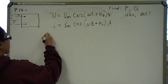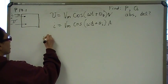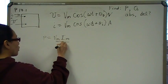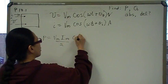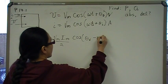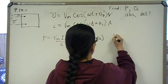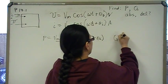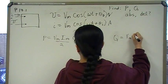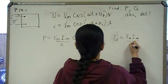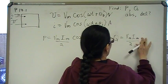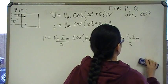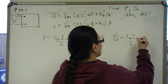You need to know what the formula is. The formula for real power is: P equals the magnitude of the voltage times the magnitude of the current, over two, times cosine of theta-V minus theta-I. And then the reactive component — Q is what we use.